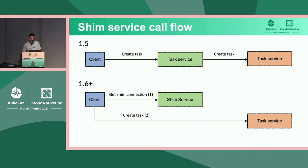A quick recap of how our runtime system works today: shims implement the interface for the task service, and the ContainerD daemon offers the same backend API to manage tasks from the client, which hides the inline communication with the runtime. Whenever we launch a container from the client, we call the ContainerD daemon service API, and behind the scenes it starts a new shim process for us and forwards create requests to that shim. For subsequent calls, the ContainerD daemon keeps the list of running shims, looks for the one we need, and forwards requests to the proper instance.